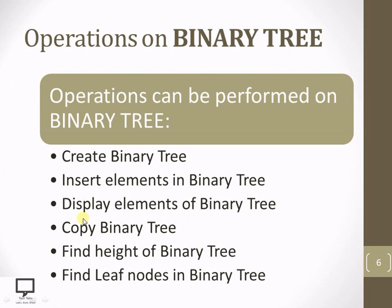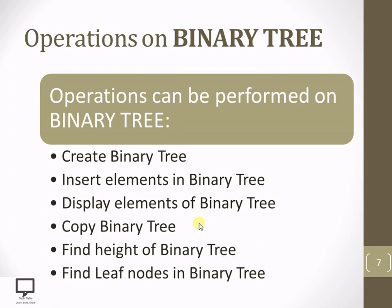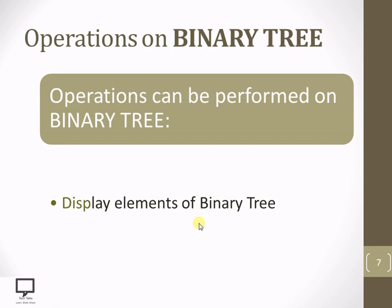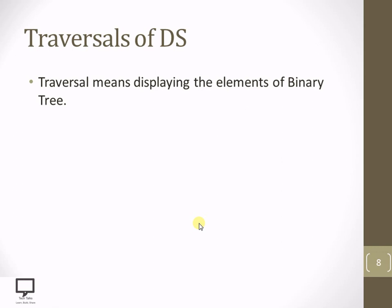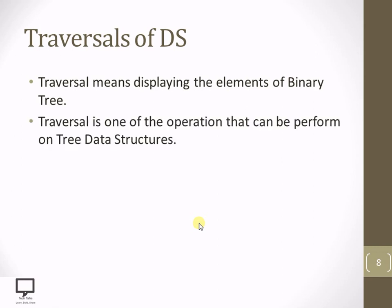These typical operations we can perform on the binary trees. In this video session, I am explaining the display elements of the binary tree. As I explained previously, displaying the elements is nothing but the traversal of the binary tree. So now let's start with the traversal of the binary tree. Traversal means displaying all the elements of the binary tree. This is one of the operations that can be performed on the tree data structure — the way in which the user can pass through all the elements present in the data structure.